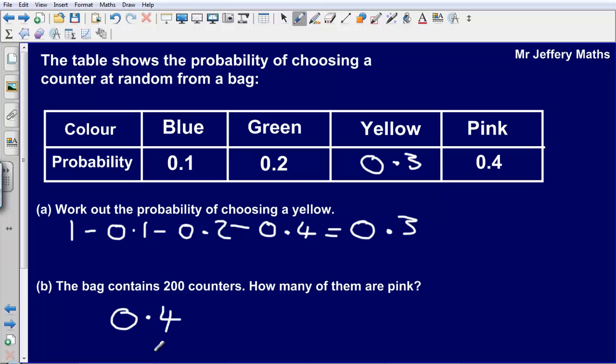Now to figure out how many of the counters must be pink, we can simply take 0.4 and multiply it by the number of counters that we've got.